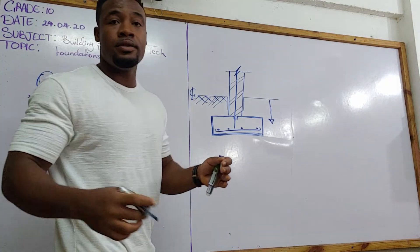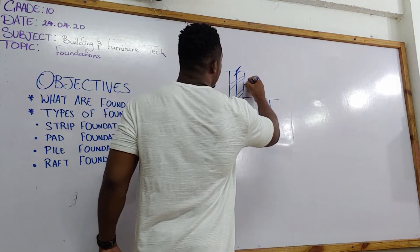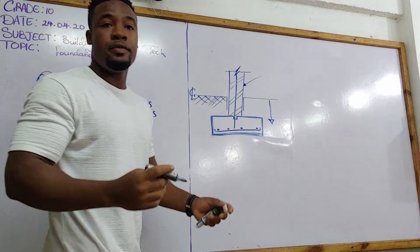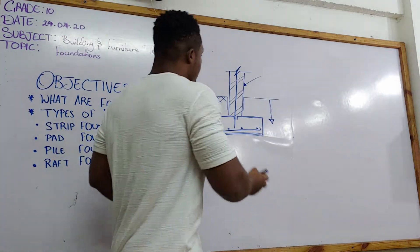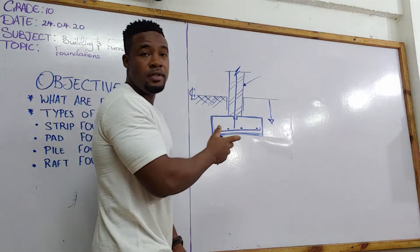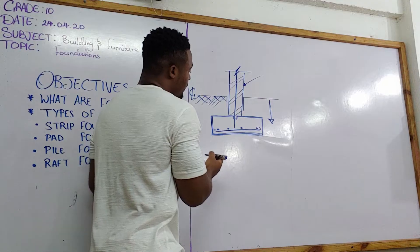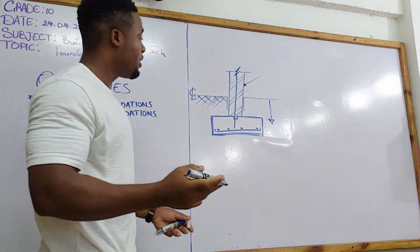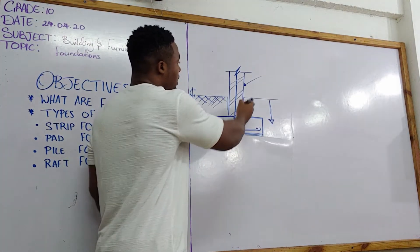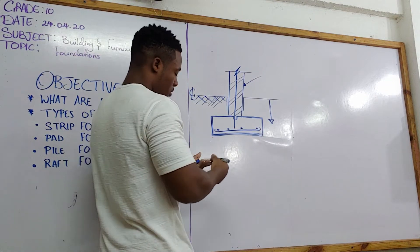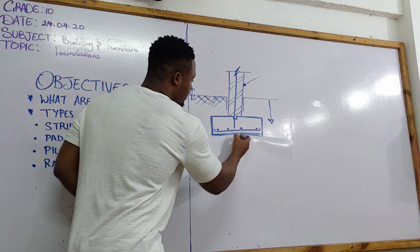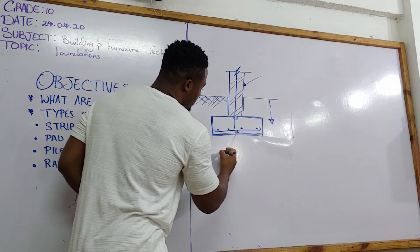The strip foundation is designed in such a way that the load-bearing wall — this member here — is the reinforced concrete block wall coming up out of the side. The concrete block wall rests upon the base or footing of the strip foundation. The footing is made out of a mixture of concrete and various aggregates, cast below the subsoil, and it contains steel reinforcements within it.